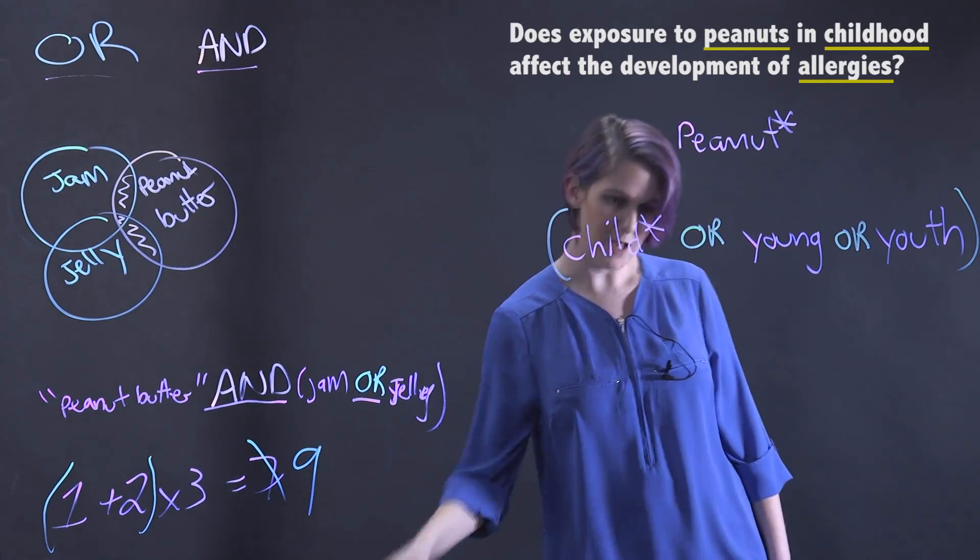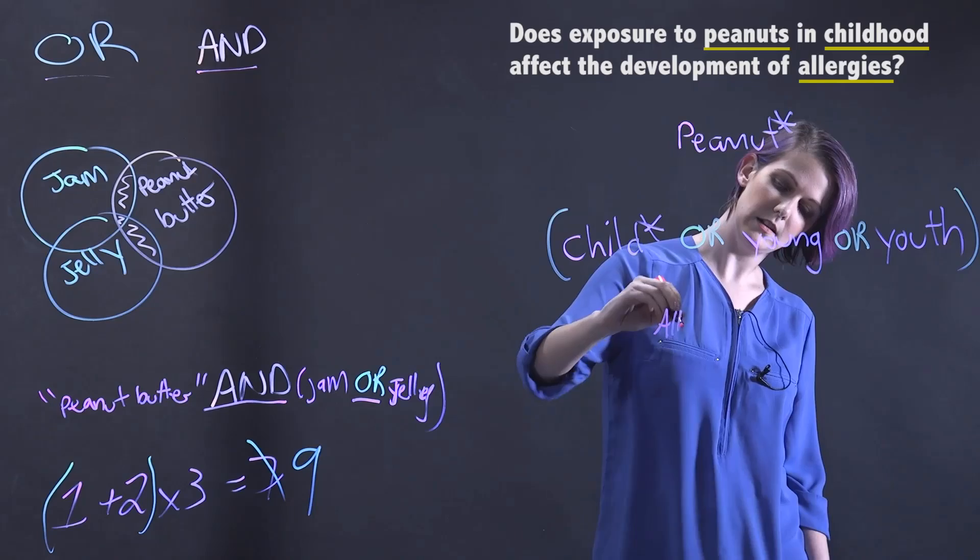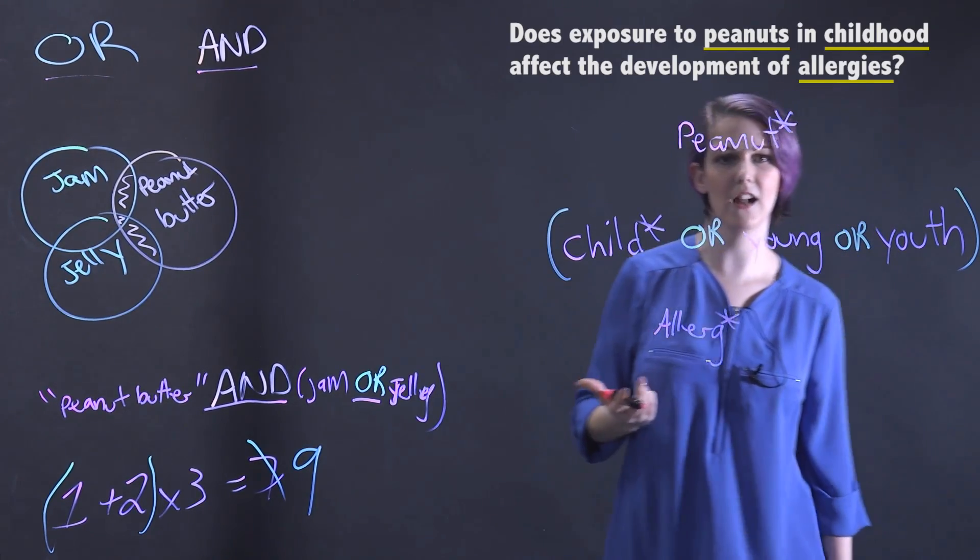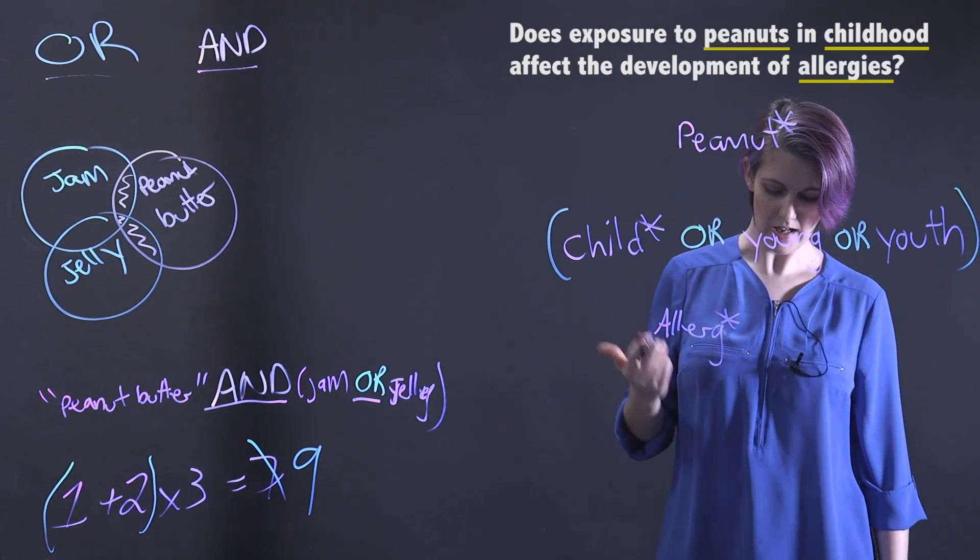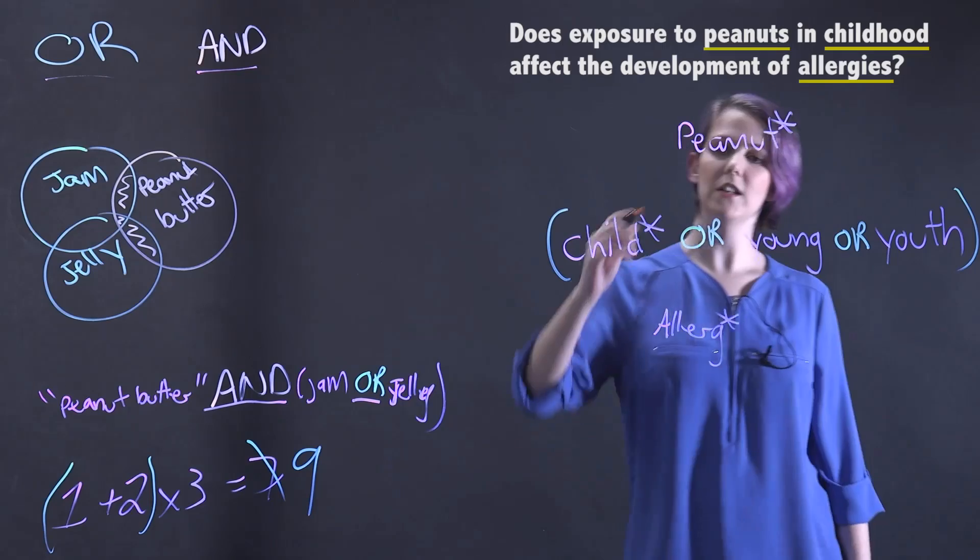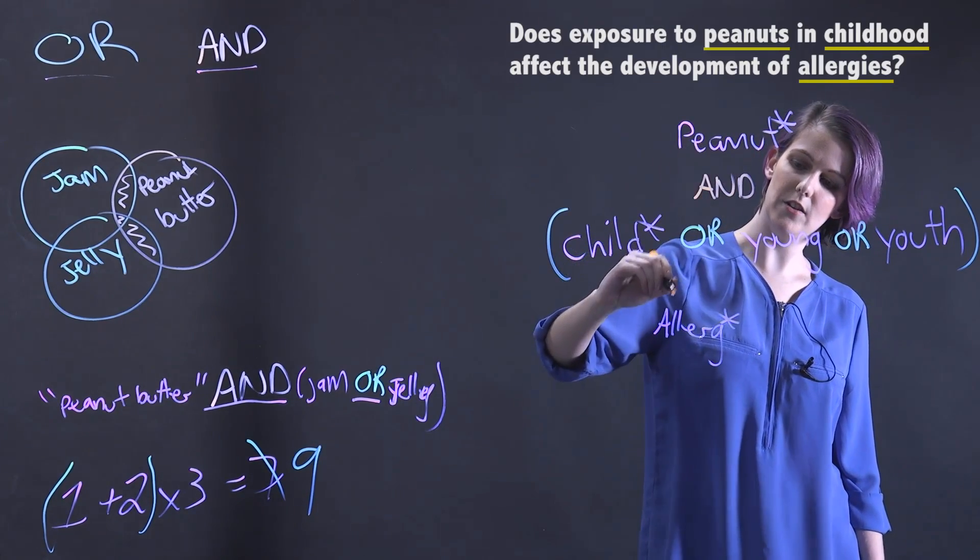Our final concept, allergy. We would search with a star, which would find allergy, allergies, allergenic, and allergic. Finally, we would want to AND all of our different concepts together.